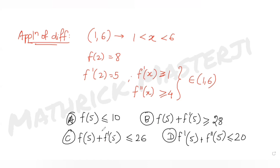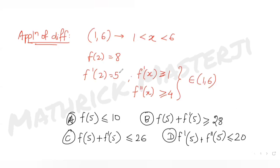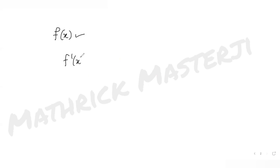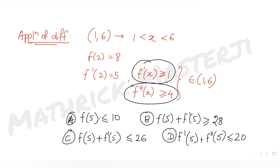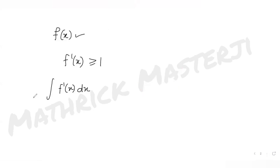Let's solve this. We have f'(x) ≥ 1. Integrating both sides from x = 2 to x = 5, since our answer choices involve 5 and the given values involve 2, we get the integral of f'(x) dx ≥ integral of 1 dx, with limits from 2 to 5.